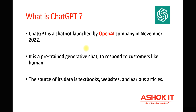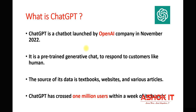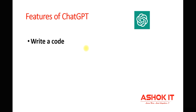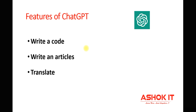ChatGPT crossed one million users within a week of its launch. By using ChatGPT you can write code — Java programs, Python programs, Dockerfiles, Kubernetes manifest files — whatever you want, just ask and it will provide the code. You can also write articles, translate text from one language to another, and write stories or poems.